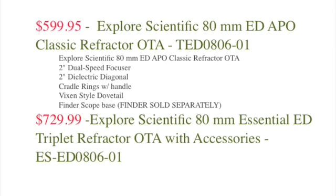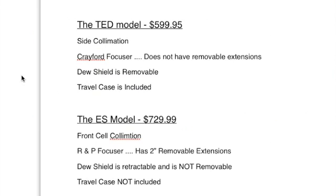And so I contacted the store where I was considering purchasing the scope, and they told me the basic difference. The TED has side collimation where the ES model has front cell collimation. There's a Craver focuser on the cheaper one and an R&P focuser on the ES model. And the Craver does not have removable extensions where the ES model has two removable extensions. The dew shield on the TED model is removable, and the one on the ES model is retractable.